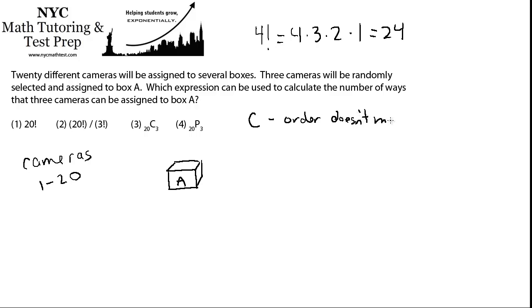When you're using a combination, you don't care if the three cameras in the box, suppose the cameras in the box are numbers two, seven, and twelve. You don't care if you picked them in that order.